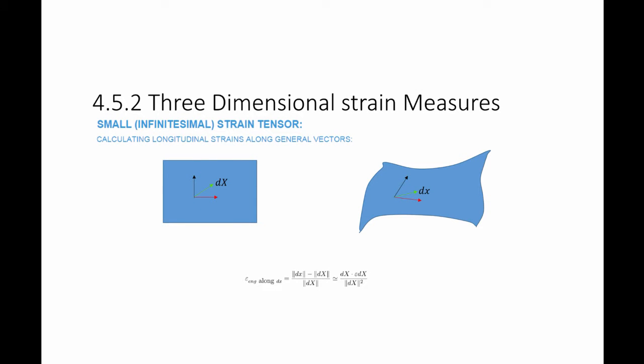The first function of the small infinitesimal strain tensor is that it can be used for calculating longitudinal strains along general vectors. If I have vector dX and it becomes vector dx, and I want to know the strain along this direction — basically the length of dx minus the original length dX divided by the original dX — I can calculate this using: dX · ε · dX divided by ||dX||².